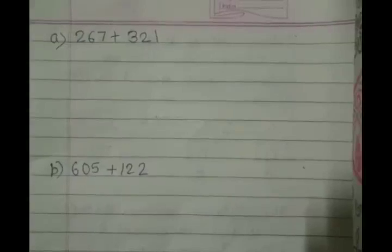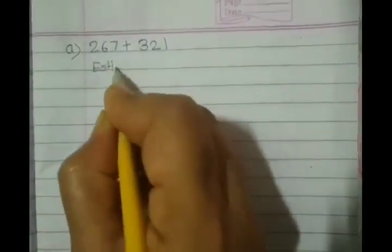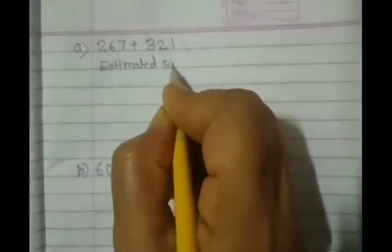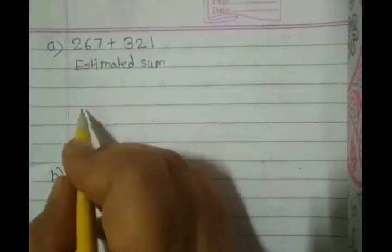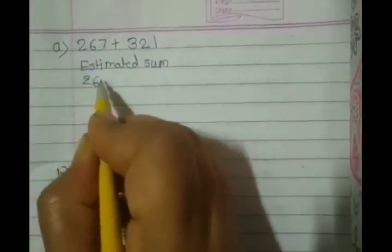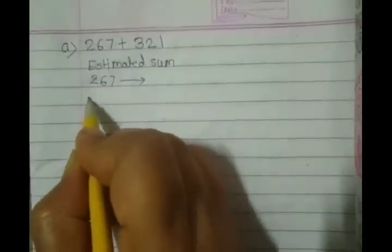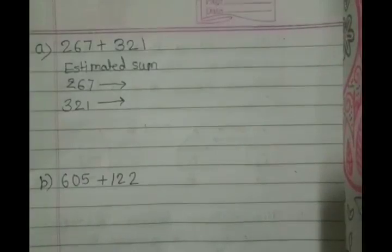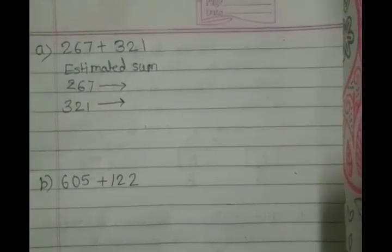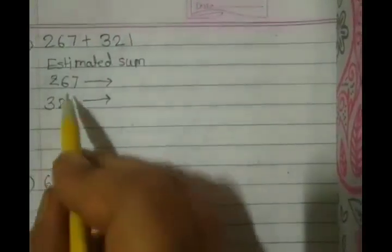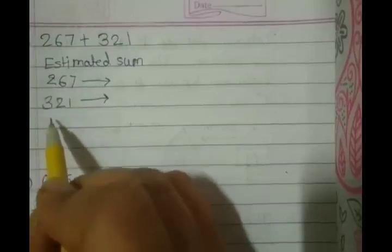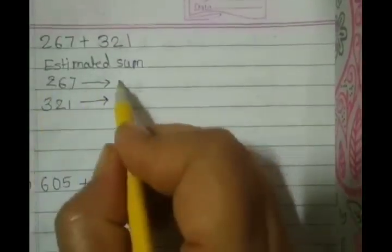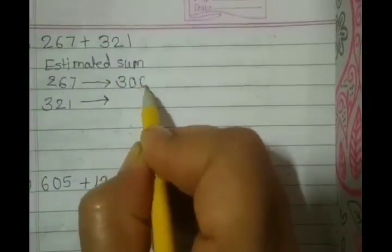We are having 267 plus 321. First we will write the estimated sum. While solving the estimated sum, we are supposed to round off the given numbers. So here we are having 267 and 321. When we round off the number to the nearest 100, we concentrate on the tens place. In the first number at the tens place, we are having 6. So hundreds place will increase by 1 and this 2 will become 3. So we round off it into the 300.